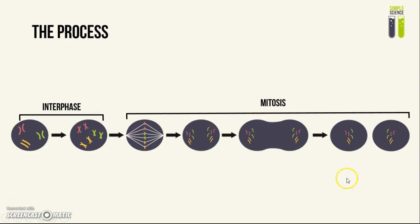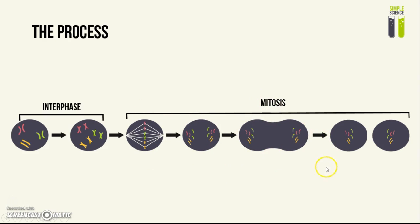During mitosis, what happens is that the copies of the chromosomes will be separated to the two opposite poles of the cell, and then that cell will divide in the middle. This will result in two daughter cells that are genetically identical, and the number of chromosomes will be maintained.